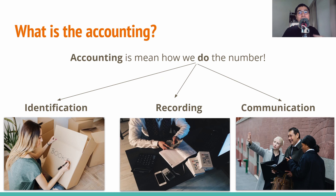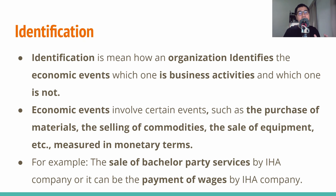So 'do the number' means that an accountant, or you can suppose that is a company, has to identify, record, and communicate the numbers as well as the economic events. And we will together find out what identification, recording, and communication mean. As we have been picking up on the previous slide, the accounting activity consists of three phrases: identification, recording, and communication.